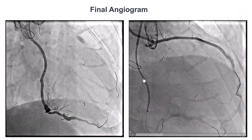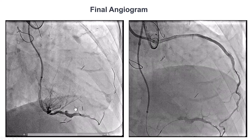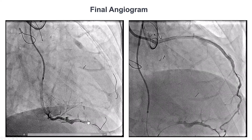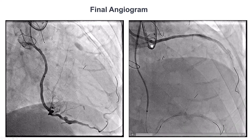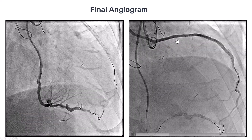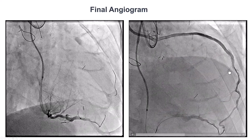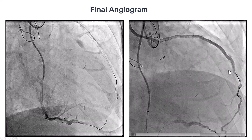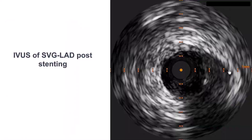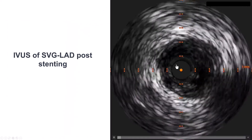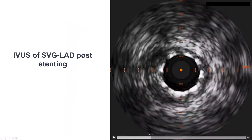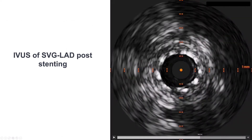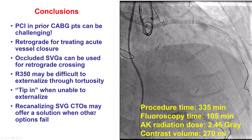This was the final angiogram. Now there is flow into the RCA, and there is also flow into the LAD coming from the previously occluded saphenous vein graft to the LAD. We did intravascular ultrasound of the saphenous vein graft — that was a good result with good stent expansion throughout the SVG.